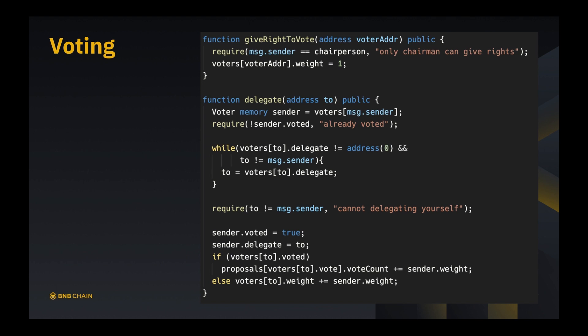The first thing we need to do is be able to create voters, because right now the only voter is the chairperson, which is not very ideal. So we have a function called giveRightToVote, and it has an address voterAddress corresponding to the address of the voter. This can only be invoked by the chairperson, so we first require message.sender is chairperson. Otherwise we tell people only chairman can give rights. If that is the case, we proceed and set voters[voterAddress].weight equals to one.